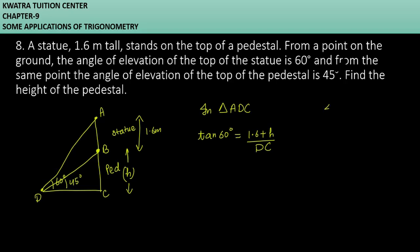Now we will use the other triangle, which is BCD. In triangle BCD, tan 45 equals H over DC. Tan 45 equals 1, so H over DC equals 1. What does this mean? These values are exactly the same. BC and DC are exactly the same, because H equals DC.